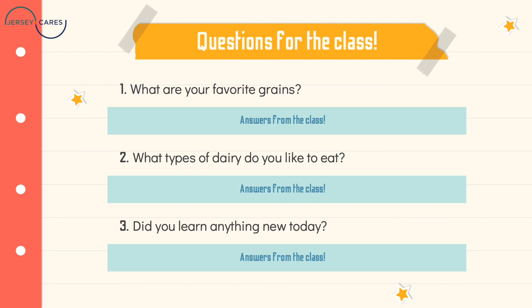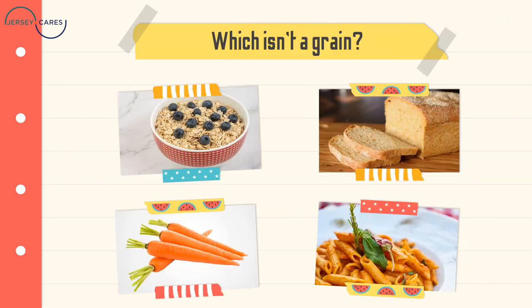Now some reflection questions you can think about on your own: What are some of your favorite grains? Personally, I love oatmeal for breakfast. What type of dairy do you like to eat? I love cheese — I love putting feta on top of my salads. And did you learn anything new today?